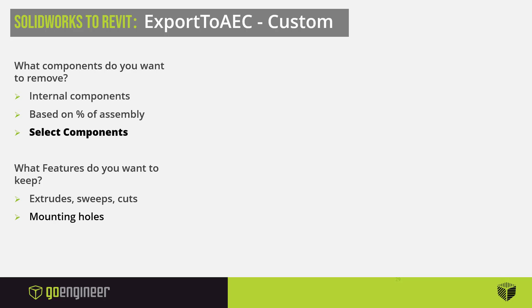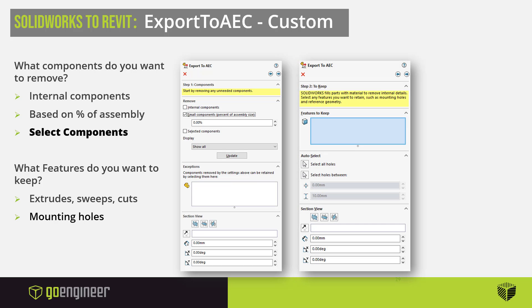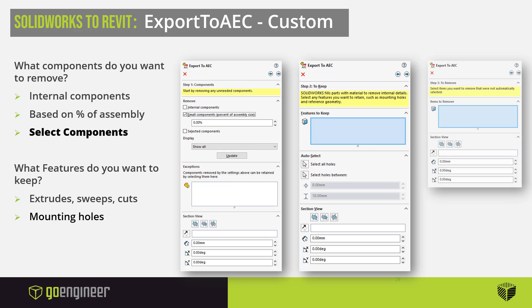As we saw in the case study, they had a step where they removed any components from the assembly that did not impact the outside shape. That is the first process in the Export to AEC command after you select custom. The second step is to select any important features you want to keep — for instance, you may want to keep the mounting holes for location purposes, or some of the features on the underside if the architect needs to measure that. The last step is like the defeature command, where you have the ability to remove any features that were not automatically removed.